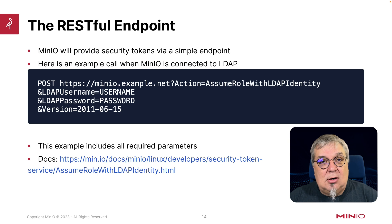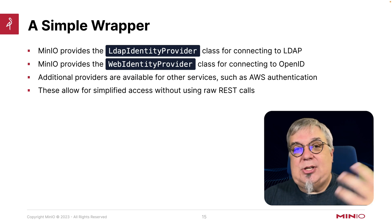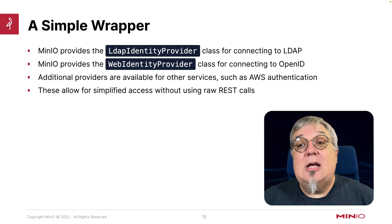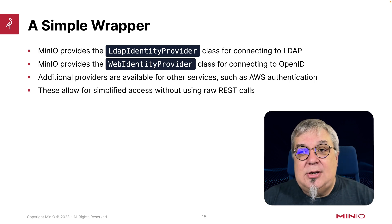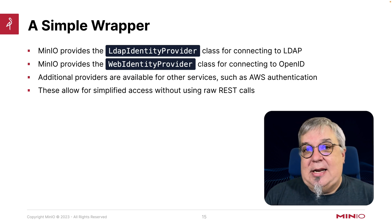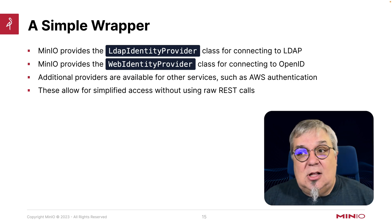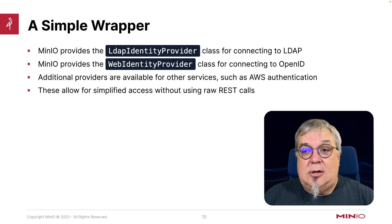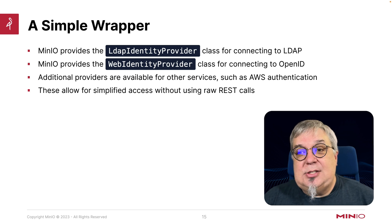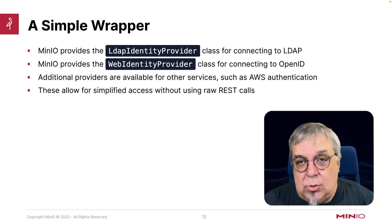Calling that RESTful endpoint through Python could get a little tedious if you're setting up an HTTP client and all that. So MinIO provides a very simple wrapper around both the LDAP identity provider and the web identity provider, which is used for OpenID. There are other providers available, including AWS authentication if you're federated with that. This allows you to have simple access to MinIO without having to go through raw REST calls and managing a lot of tokens.